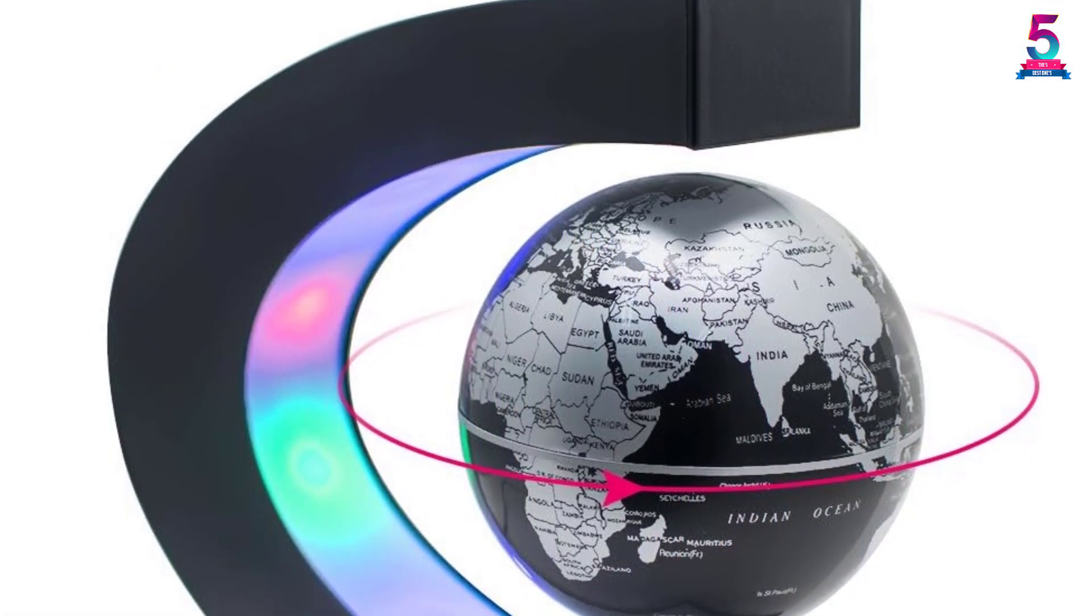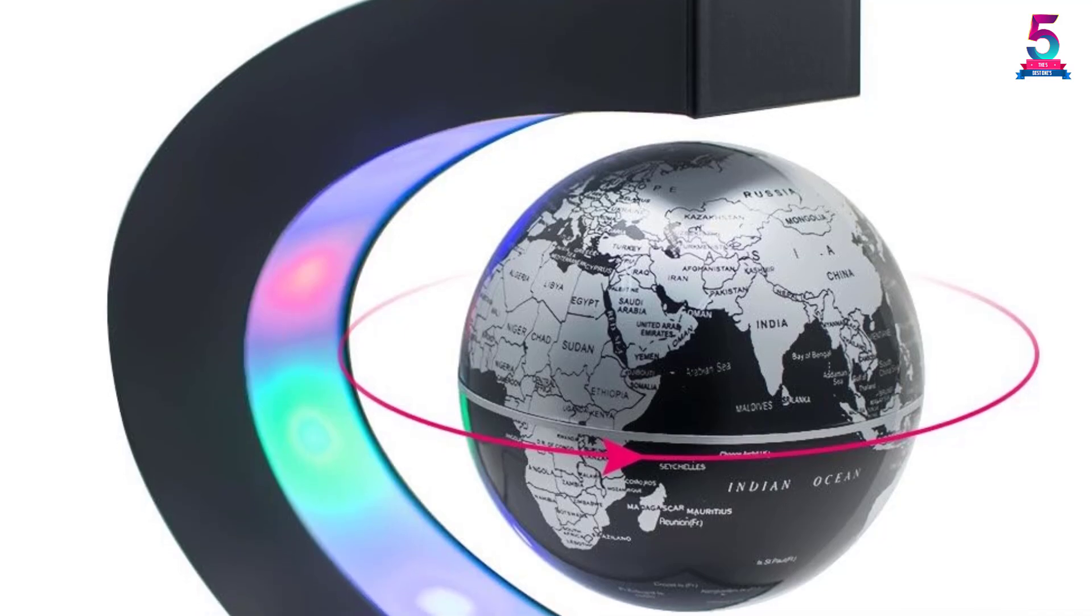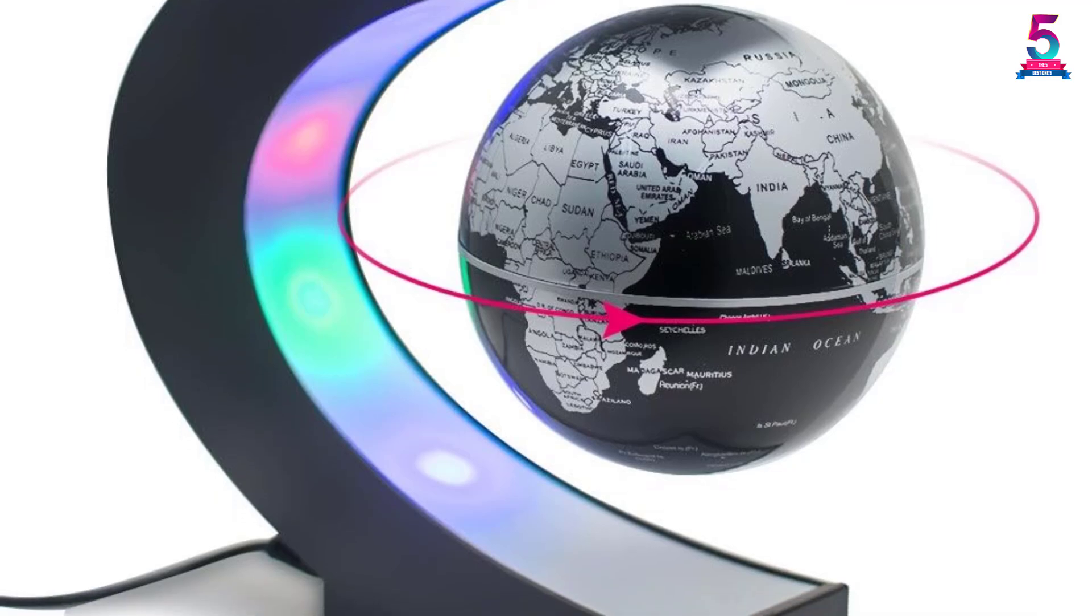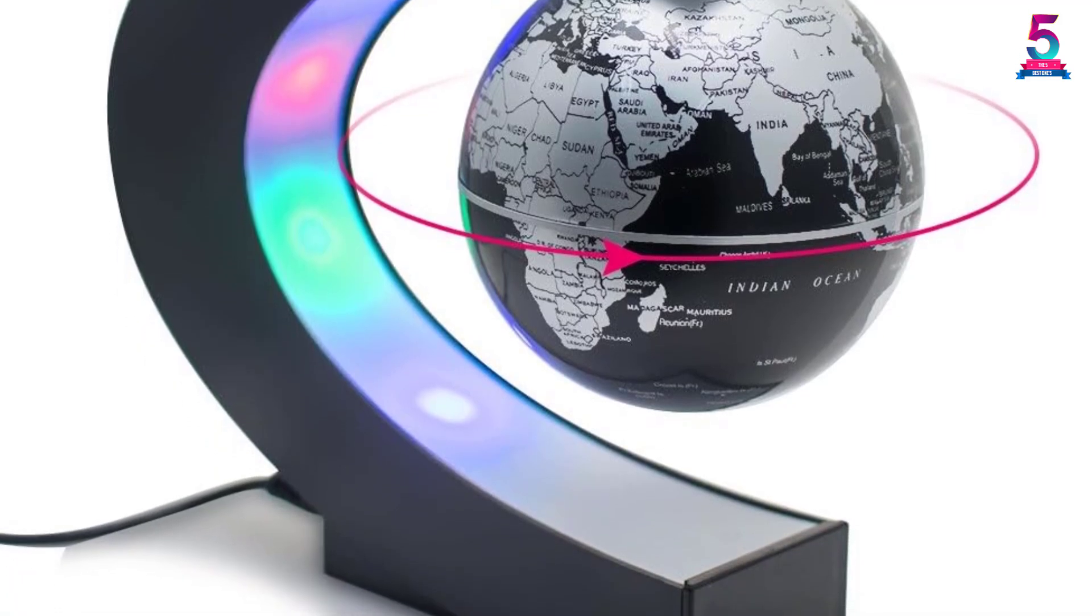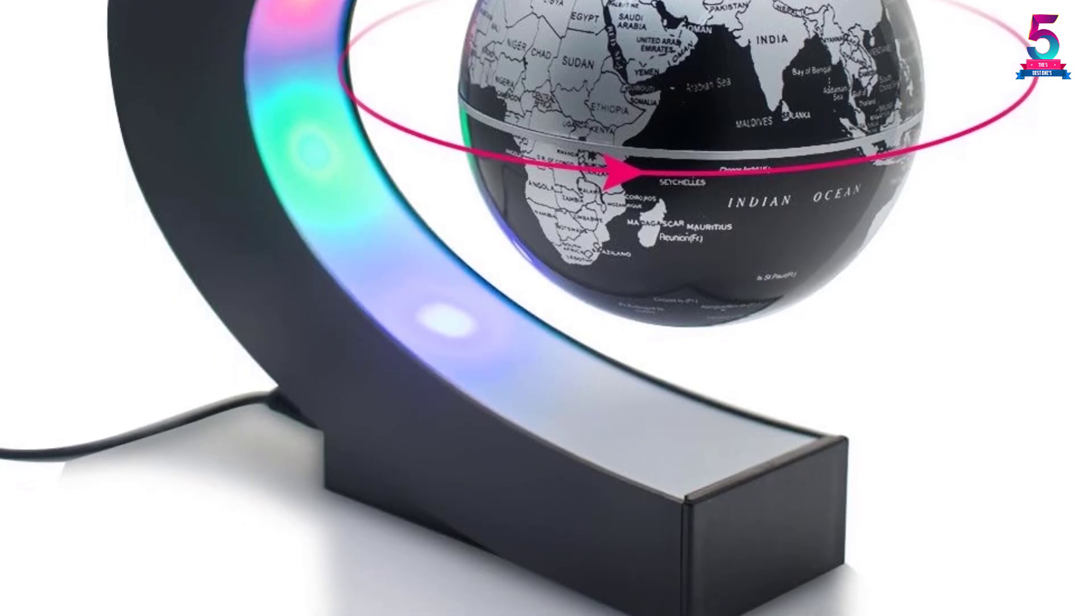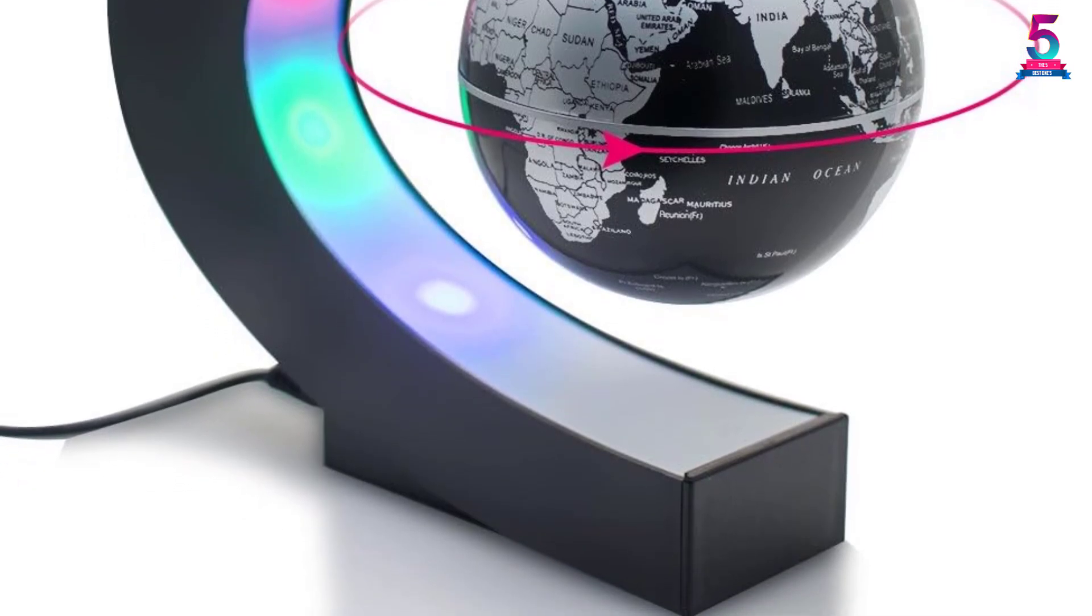Just plug the C-shaped base with power and place it on a horizontal surface. After that, you just have to keep the globe within the C-shaped base and set it up so that it can float in mid-air. You will also feel the strong magnetic force affecting the globe when it is properly set up.